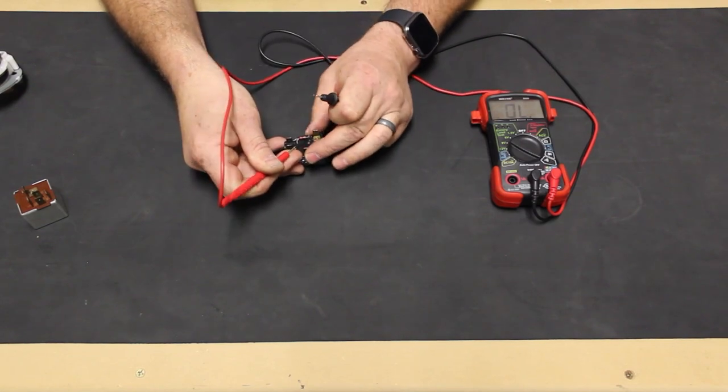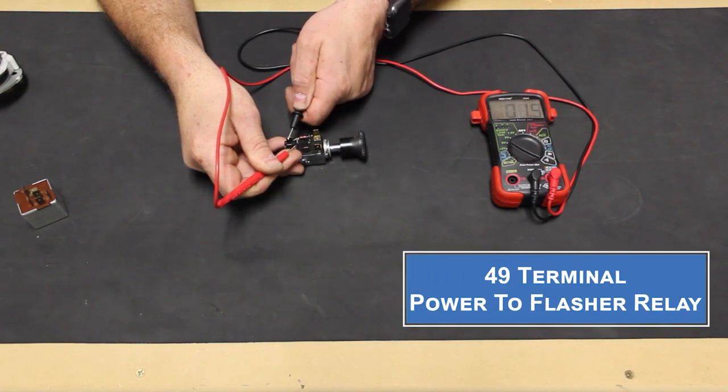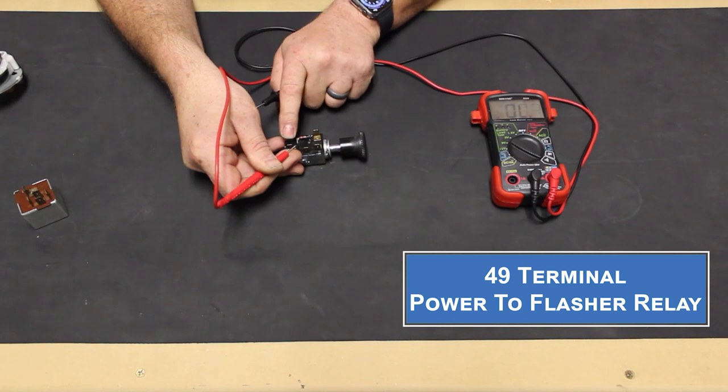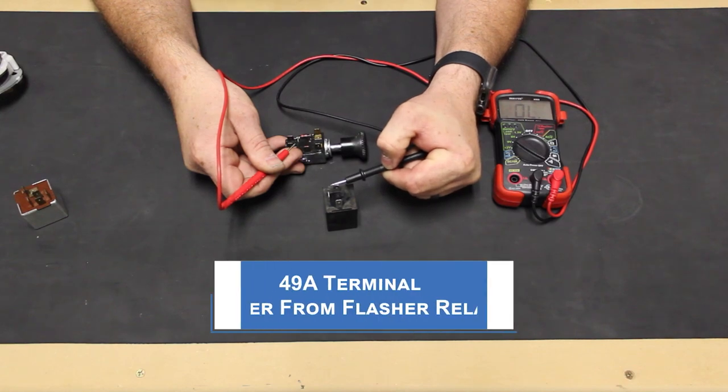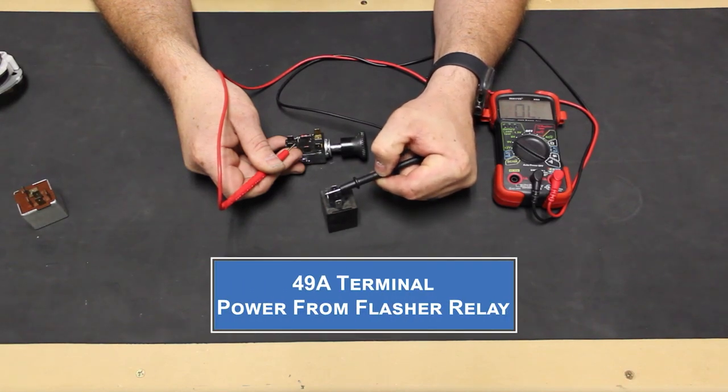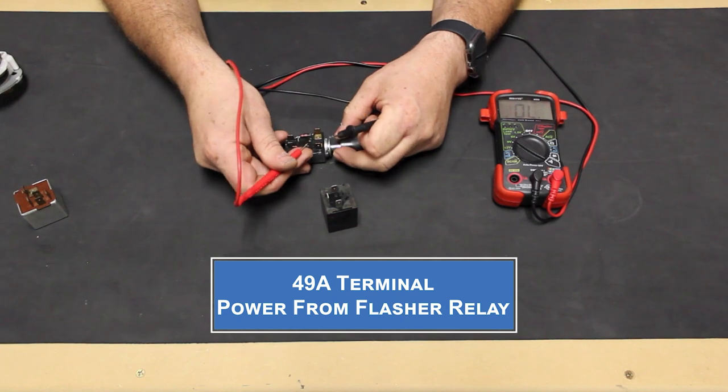Pulling the knob out to turn on the switch and we now have power at the 49 terminal. That power would go out to our flasher relay here to the 49 terminal on the flasher relay. Then the power would go from the 49 terminal on the relay back to the hazard switch at the 49A terminal on the switch.